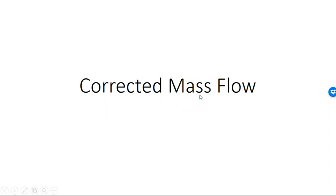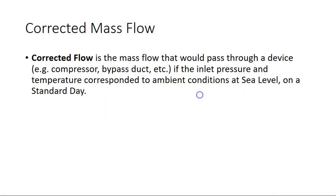Hello, in this video we're going to look at corrected mass flow. Corrected mass flow is defined as what the mass flow through an engine, say the inlet or the compressor, would be if we are at some reference condition, normally sea level. So what would the mass flow be going through the engine if we were at sea level?